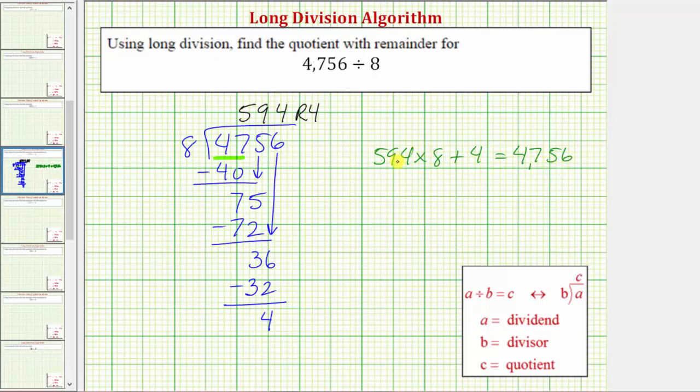Again, this is telling us 594 copies or 594 groups of 8 plus 4 is equal to 4,756. If we simplify the left side, 594 times 8 is equal to 4,752. And if we add 4, notice how we do get 4,756. I hope you found this helpful.